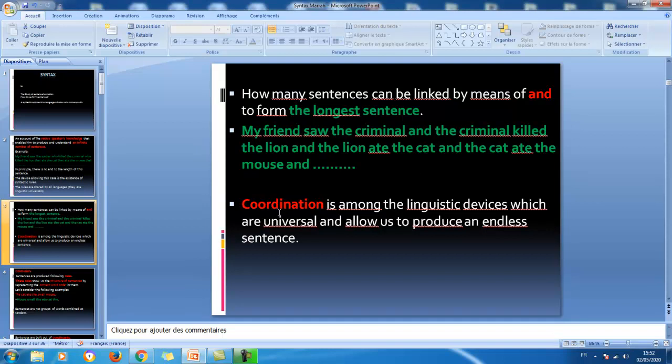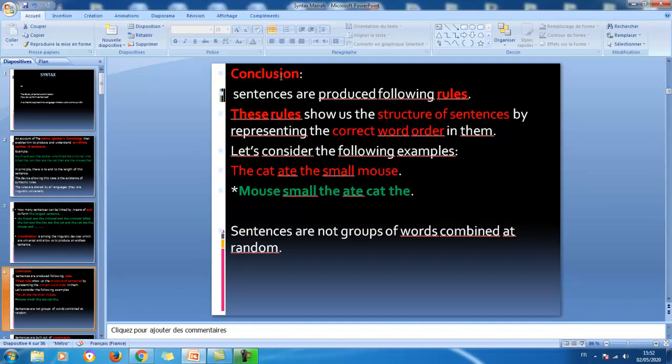This coordination is something that we call universal. It's a linguistic universal here. Now, the conclusion out of these two simple examples: Sentences are produced following rules. These rules show us the structure of sentences by representing the correct word order in them. These are two main bits of this definition that we should bear in mind. The rules reveal the structure of sentences, how sentences are formed, how they are composed of different units, and we are going to explain and show exactly the correct word order in sentences.